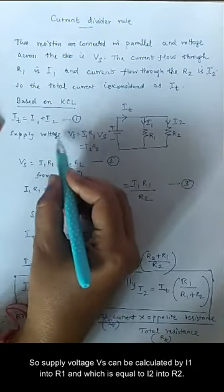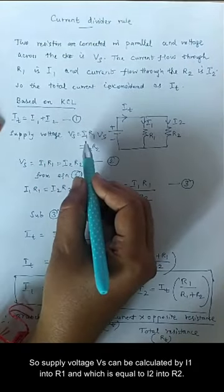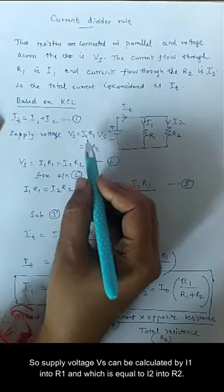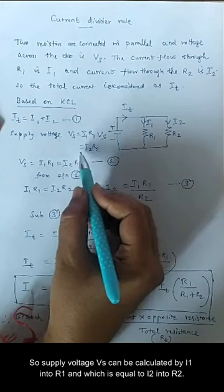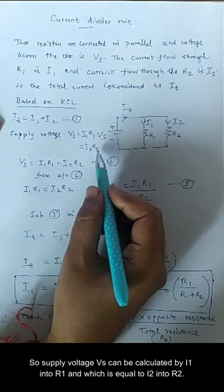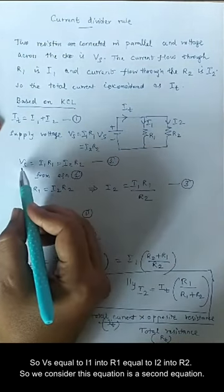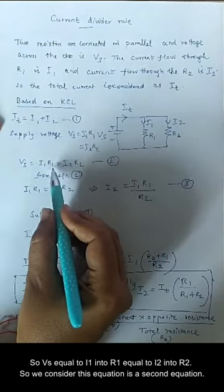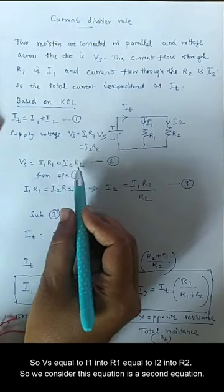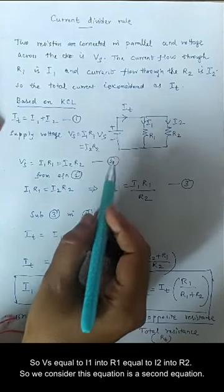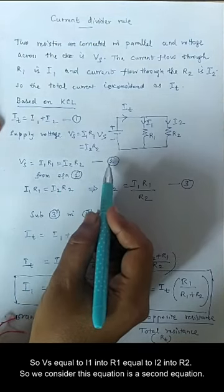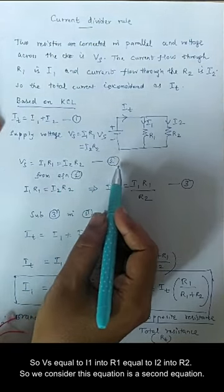The supply voltage Vs can be calculated by I1 into R1, which is equal to I2 into R2. So Vs equals I1·R1 equals I2·R2. We consider this as equation 2.